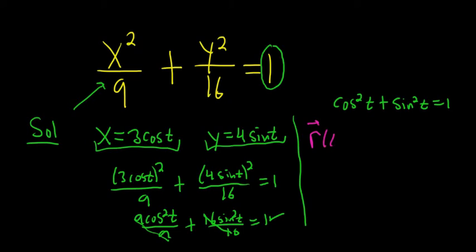The vector-valued function r of t is equal to x of t i hat plus y of t j hat.